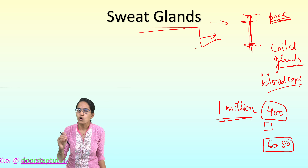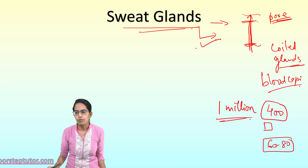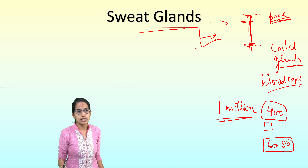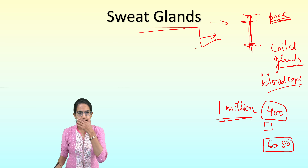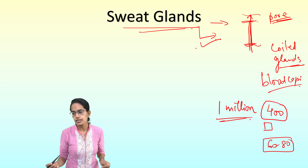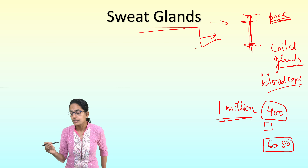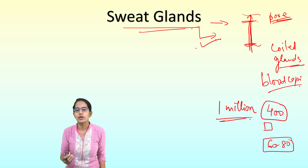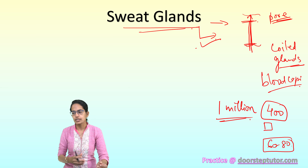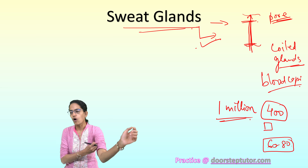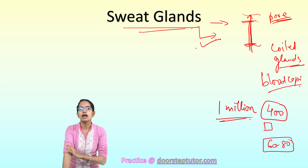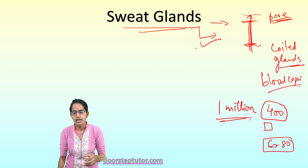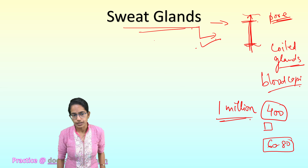Sweating occurs normally in summer but can also occur due to nervousness, danger, shivering, or weakness. Sometimes we call it cold sweating. Cold sweating is associated with weakness, nausea, or extreme pain experienced by the body.